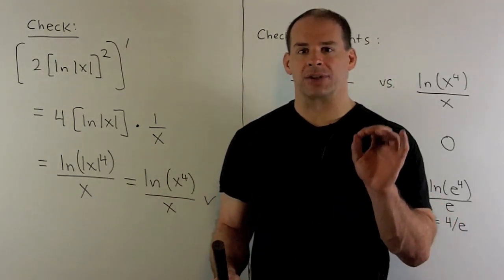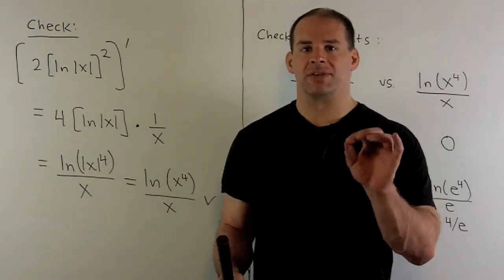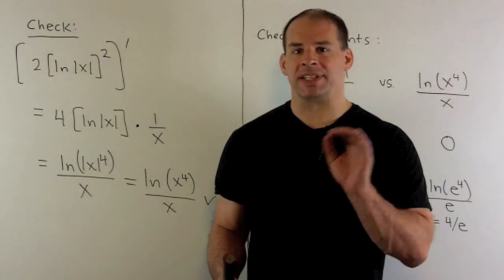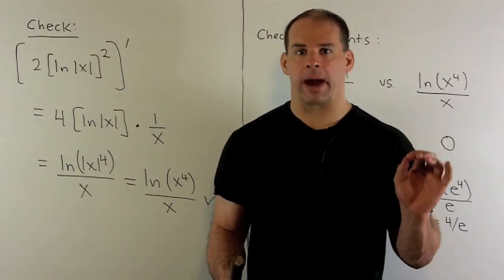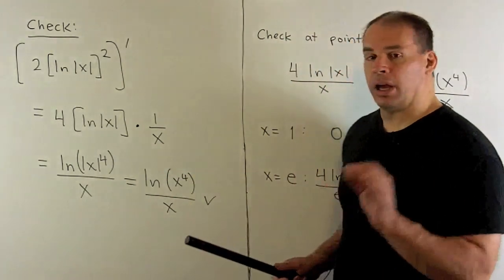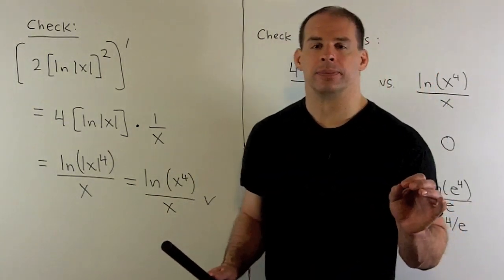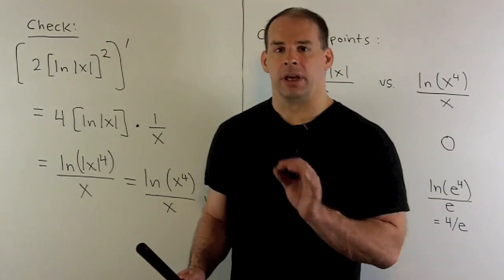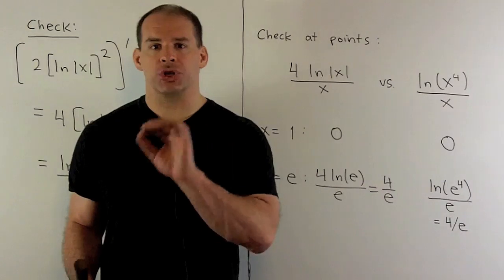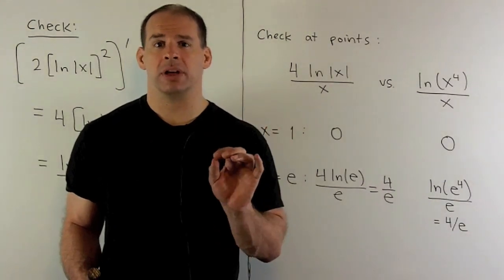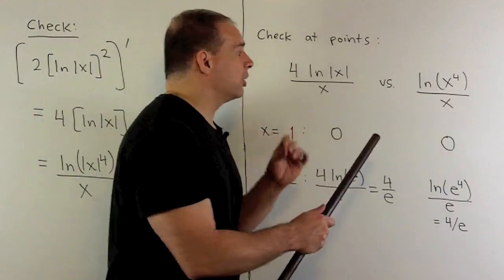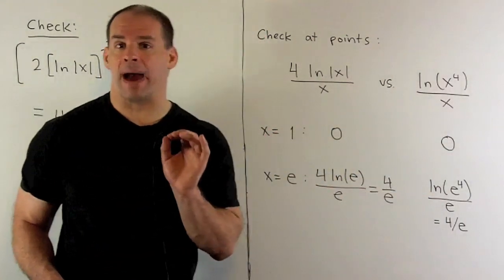Now, absolute value of x to the 4th power always gives back a positive number when x is not zero, so it's going to be the same as x to the 4th power. That gives us back our integrand, and our work checks out. Now, if you can't make it through that full algebraic check, we could always get a partial check by evaluating the derivative of your answer and your integrand at specific points and seeing if they match up.